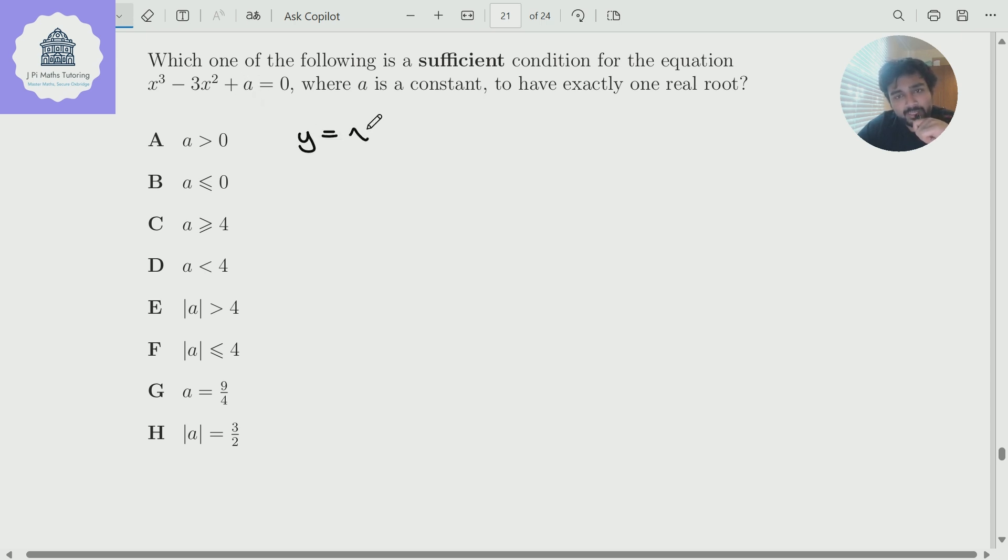I'm going to first sketch y equals x cubed minus 3x squared. And this is quite nice because I can factor out an x squared and this just becomes x squared times x minus 3. So positive cubic, it's got a repeated root at zero and it looks something like that. So that would be 3, it'd be 0. Awesome. So my cubic looks like this.